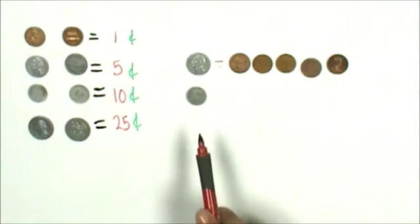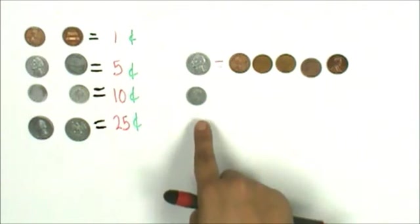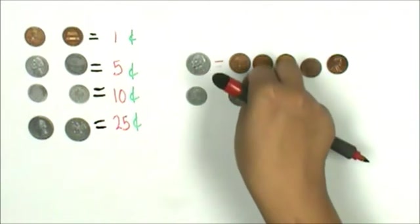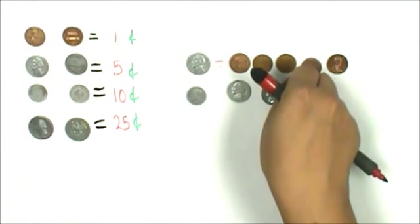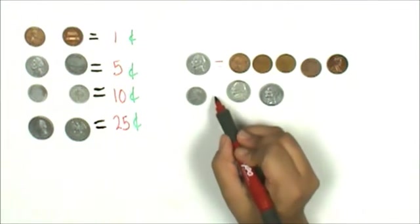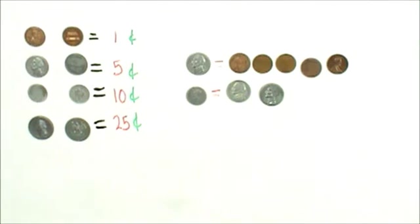The value of 1 dime is 10 cents. The value of a nickel is 5 cents. I'm going to skip count by 5 until I get to 10 cents. 5 cents, 10 cents. 1 dime is equal to 2 nickels.